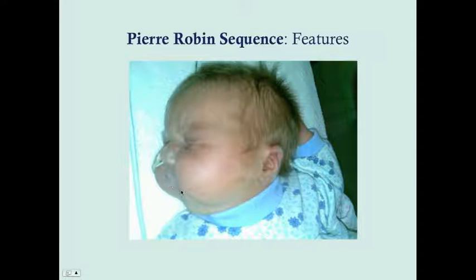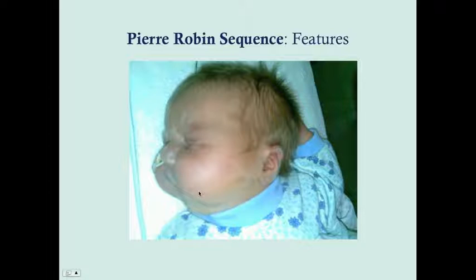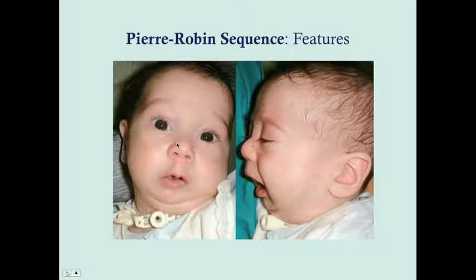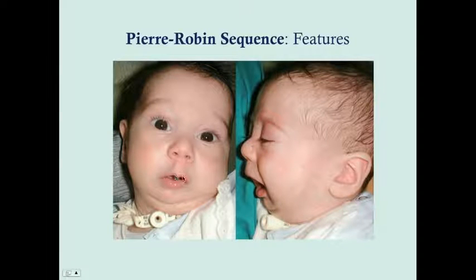This is a baby with Pierre Robin sequence — the micrognathia makes it look like there's an overbite because the maxilla is normal but the mandible is hypoplastic, so it's a retrognathia. Note that the eyes and ears are normal, so this is most likely not Pierre Robin sequence associated with Treacher Collins, but could be isolated Pierre Robin sequence or associated with Stickler syndrome or fetal alcohol syndrome.